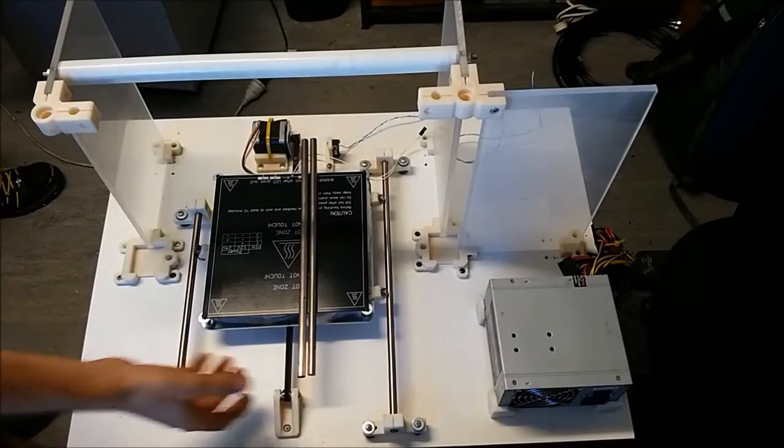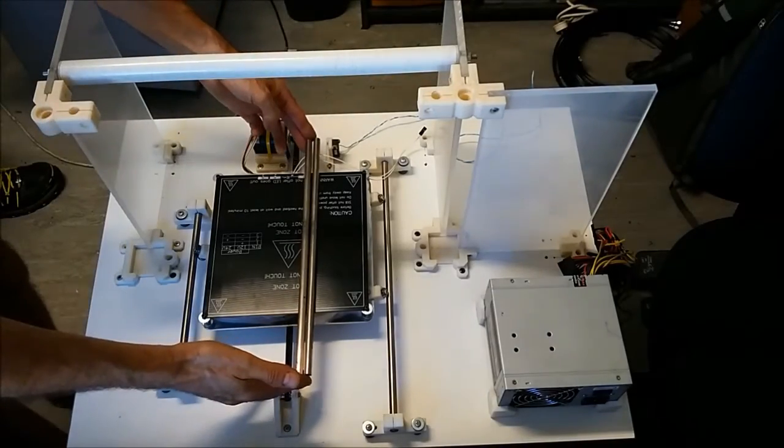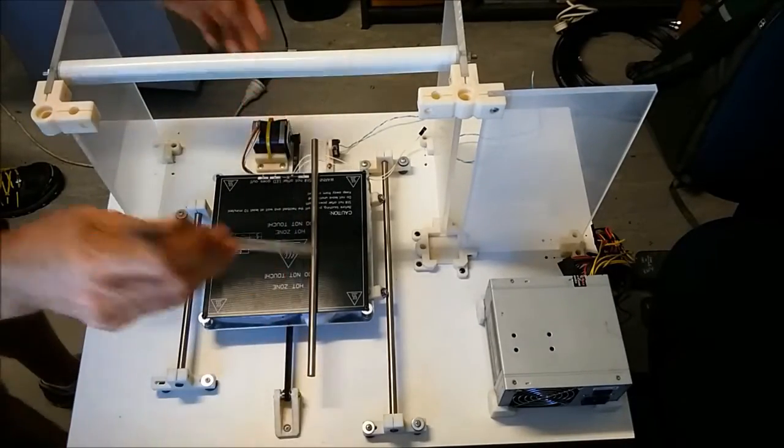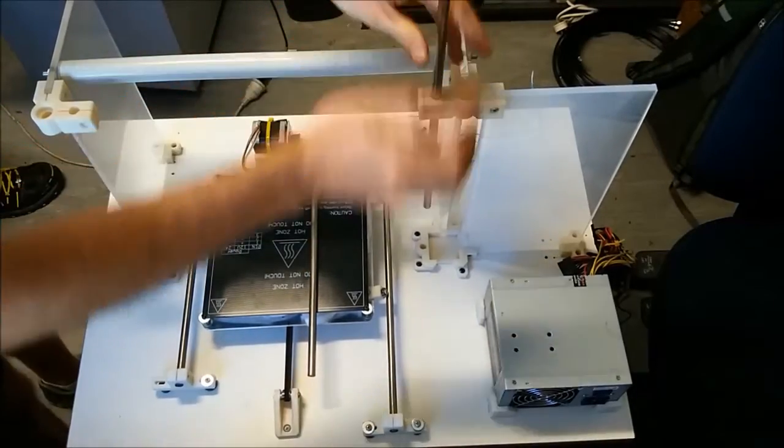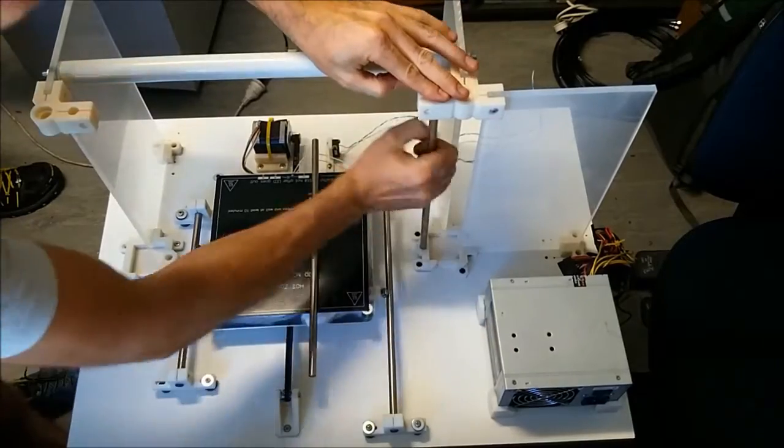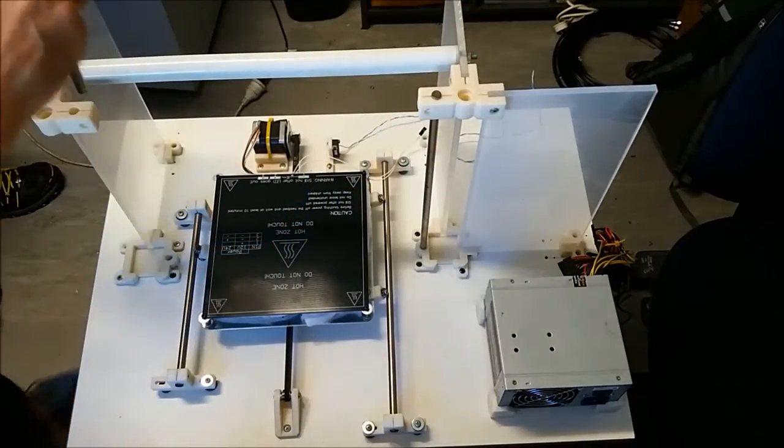We've got both our rods cut to length, both our Z-axis rods, and we're just going to install them. All we're going to do is just push them in. We're not going to do anything else at the moment. We don't have to clamp them in because we'll be pulling them out a few times later.